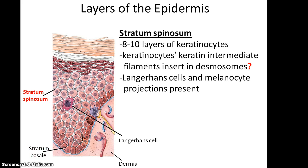The next stratum is composed of 8 to 10 layers of keratinocytes and is known as stratum spinosum. Here, the keratinocytes will begin to join tighter together by having their keratin intermediate filaments insert into the desmosomes, which are a type of cell junction. Also located in this area are the Langerhans cells that will be phagocytosing any microbes that manage to make it this far in. Also present are the melanocytes' projections, and it is at this layer that the melanocytes transfer their pigment to the keratinocytes.